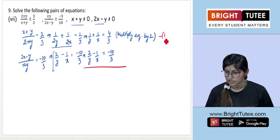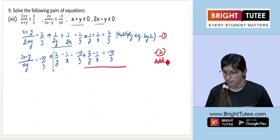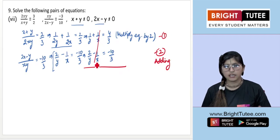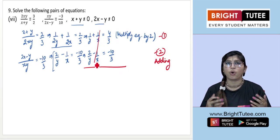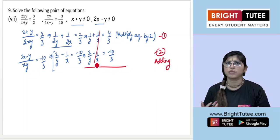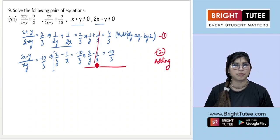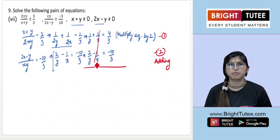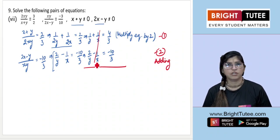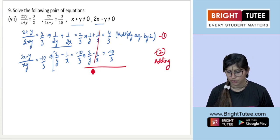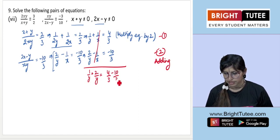Now, adding the two equations using the elimination method, the 1/x terms cancel out. We are left with 1/y + 2/y on the left side, which equals 4/3 + (−10/3) on the right side.